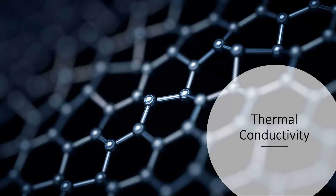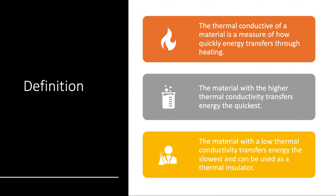Hi there and welcome to our next video on thermal conductivity. In this video we're going to be looking at what thermal conductivity is and how we can reduce unwanted energy transfer. The thermal conductivity of a material is a measure of how quickly energy transfers through heating. The thermal conductivity of materials is how quickly energy passes through it when we heat it.